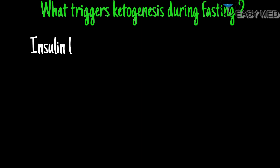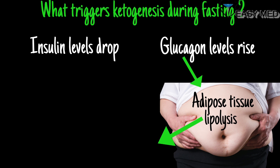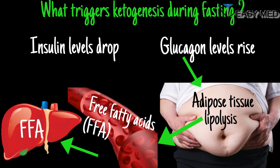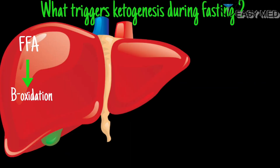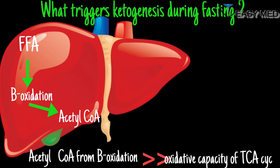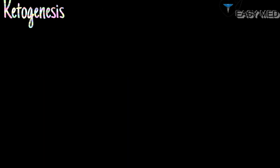During fasting, insulin in the body goes down and glucagon levels increase. Glucagon then acts on adipose tissues to cause lipolysis, which releases plenty of free fatty acids into the blood. These free fatty acids are carried to the liver where they undergo beta oxidation, producing large amounts of acetyl-CoA. When the concentration of acetyl-CoA produced from beta oxidation exceeds the oxidative capacity of the TCA cycle, acetyl-CoA is directed towards ketogenesis. Apart from free fatty acids, acetyl-CoA can also be generated from ketogenic amino acids.